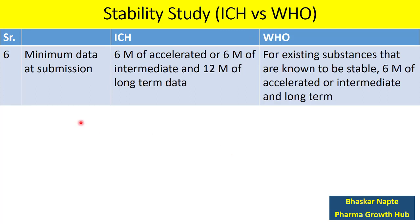Regarding minimum data at submission time points, ICH says that for new drug substances or new drug products, six months of accelerated or six months of intermediate data, along with 12 months of long-term data, is required. However, in the case of WHO, if the existing drug substance or drug product is known to be stable, then six months of accelerated or intermediate and long-term data suffices the requirement. This applies to both drug substances and products.